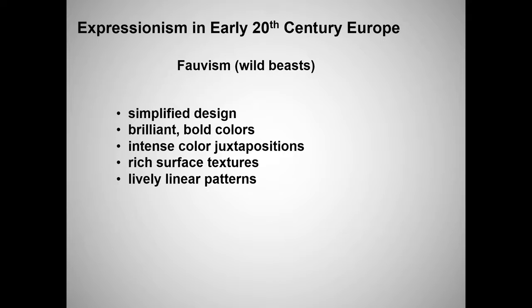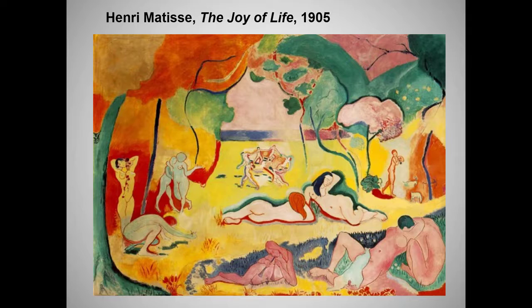Fauvism was a brief but influential movement of French artists who rejected fin de siècle despair and symbolist literary pretensions. They wanted to return to Impressionism's joyful embrace of nature while retaining post-Impressionism's expressive rather than realistic use of color. Here is a painting actually entitled The Joy of Life by the founder and leader of the Fauves, Henri Matisse.